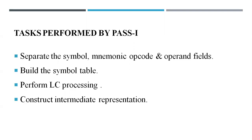The IR consists of IC — intermediate code. The tasks given on this slide — separation of symbol, mnemonic opcode and operand fields; building the symbol table; performing LC processing; and constructing the IC — are what Pass 1 does. We will go through each task so we understand exactly what Pass 1 is doing. We will see examples of this in the coming lectures.